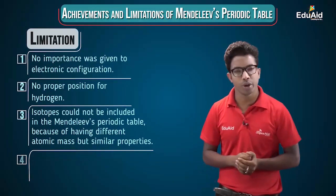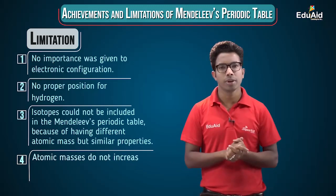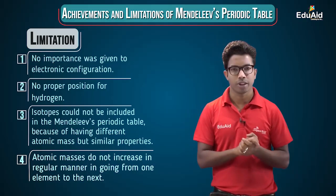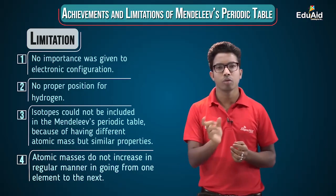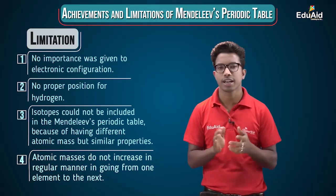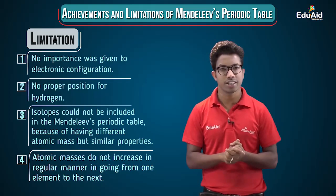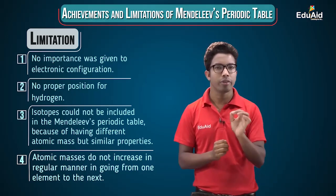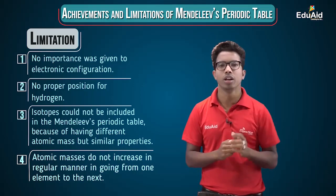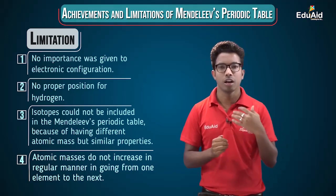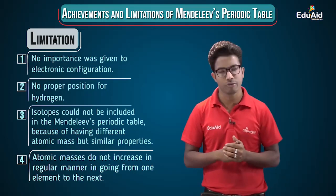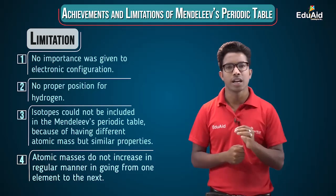The last limitation of Mendeleev's periodic table is that the increase in atomic mass from one element to the next is not fixed or regular. In certain cases the gap is very large, in others very small. Due to this irregularity, it is very difficult to predict how many elements will be discovered in the future, especially among heavy elements.